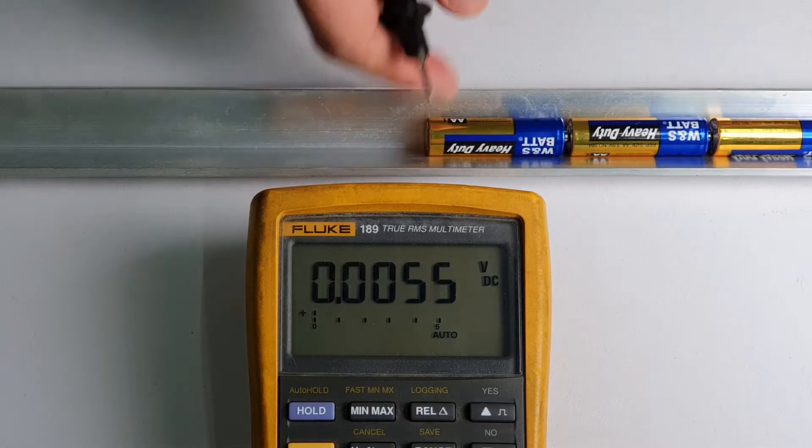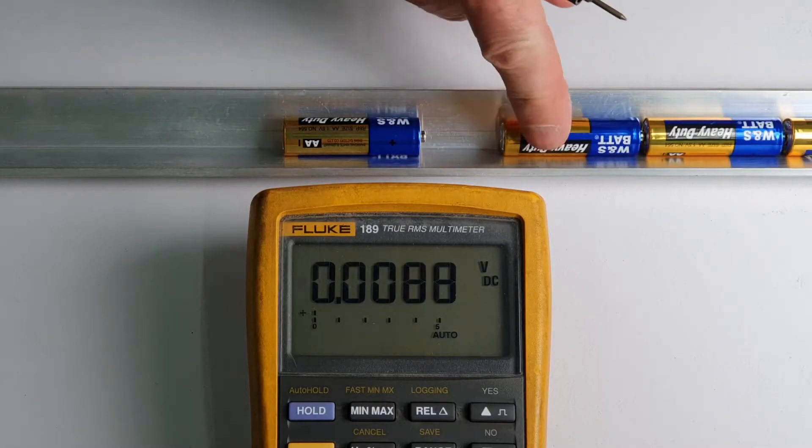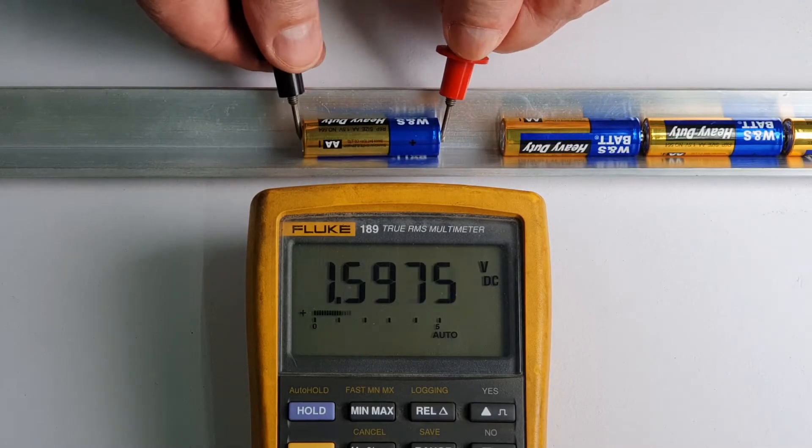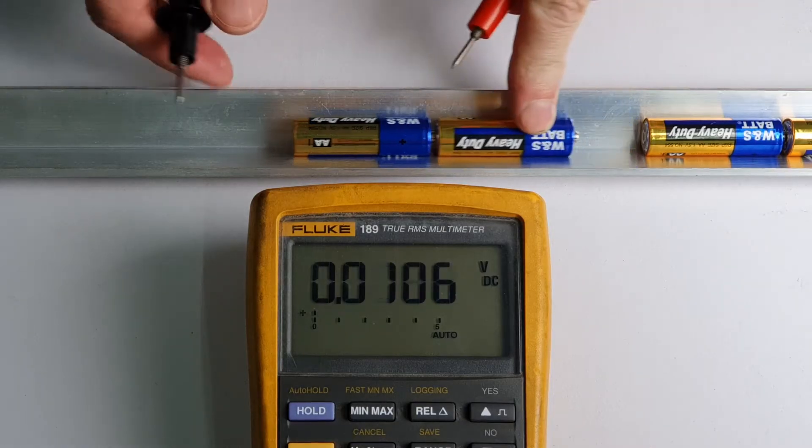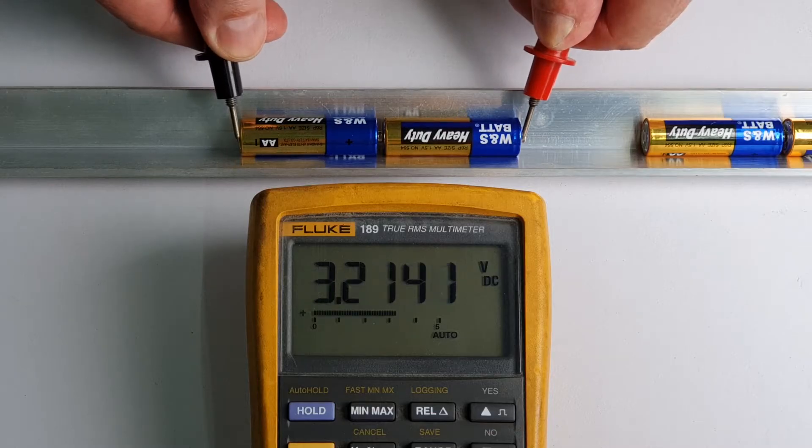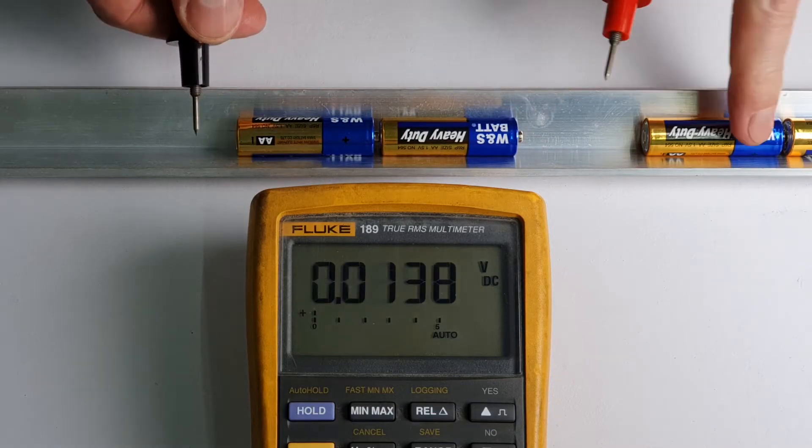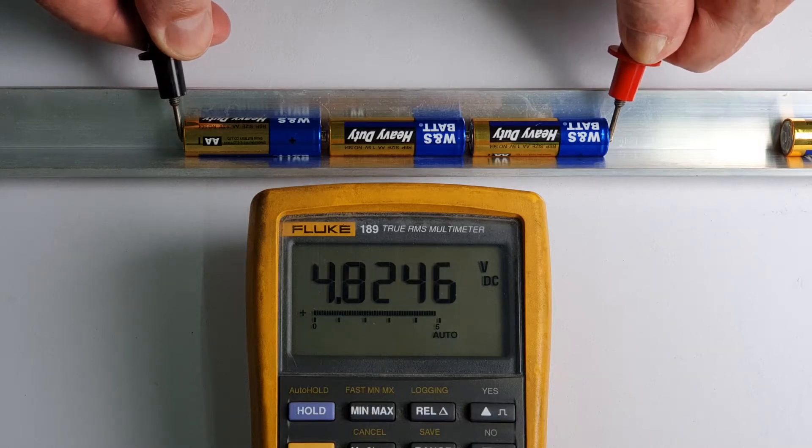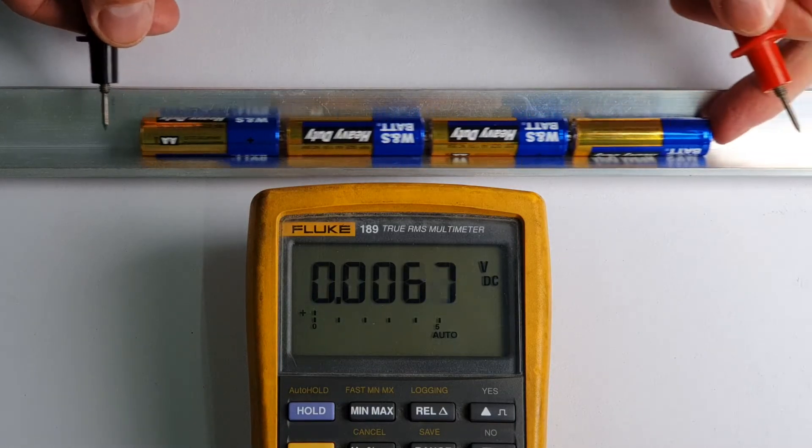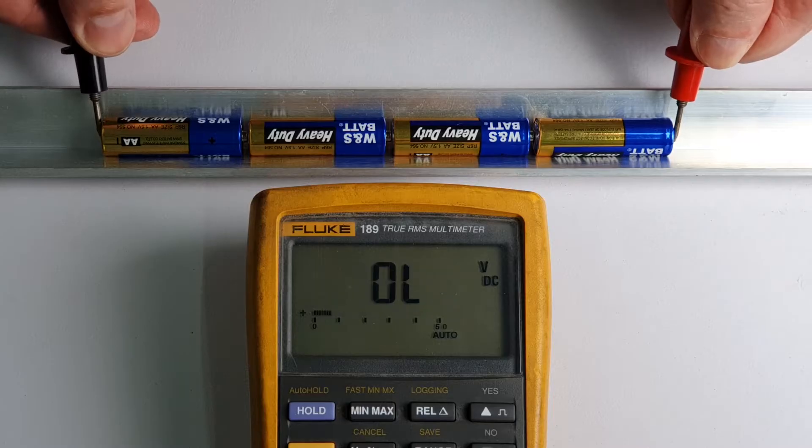Now stacking them together, we can clearly see how the battery voltage adds arithmetically. If one battery is 1.6 volts, two in series gives us 3.2. If we add another one, three in series gives us 4.8 volts, and a total of 6.4 when we use four batteries.